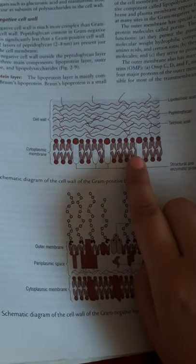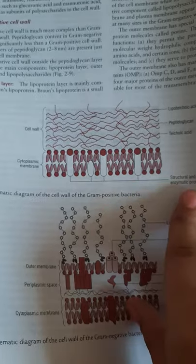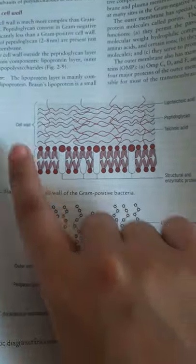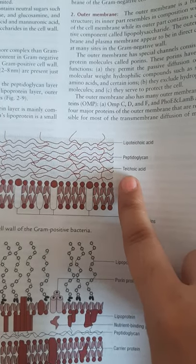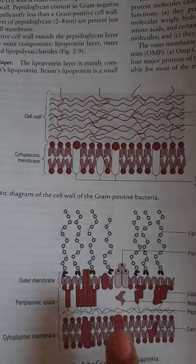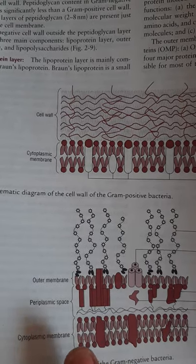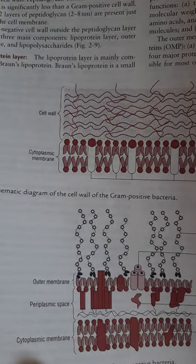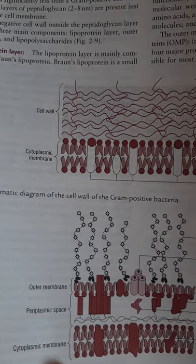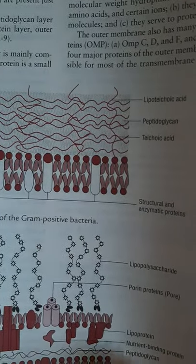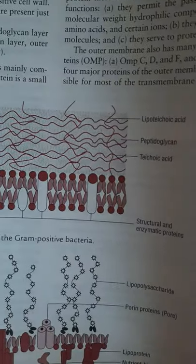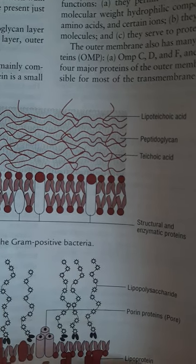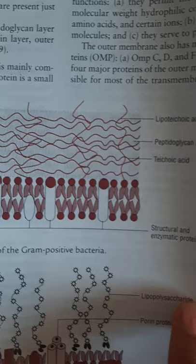In the graphical structure of gram-negative bacteria, components include lipoprotein, peptidoglycan (present in lower amounts), nutrient binding proteins, lipoproteins, porin proteins, and lipopolysaccharides.